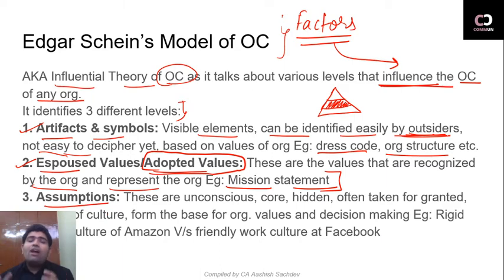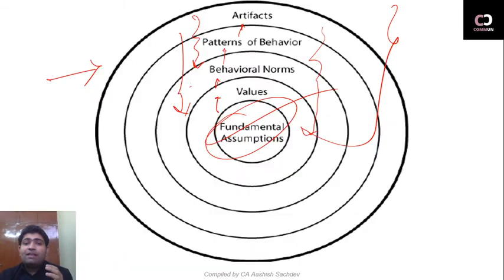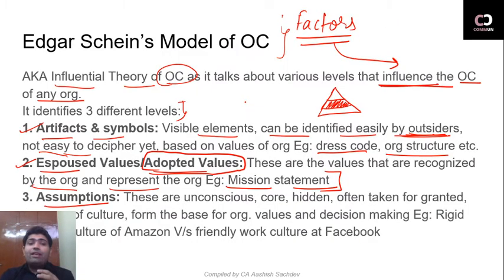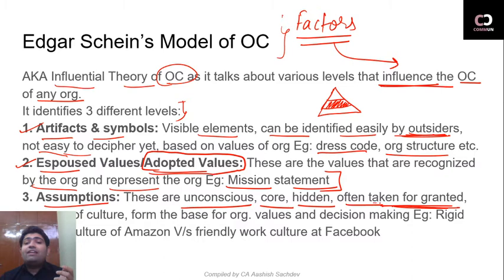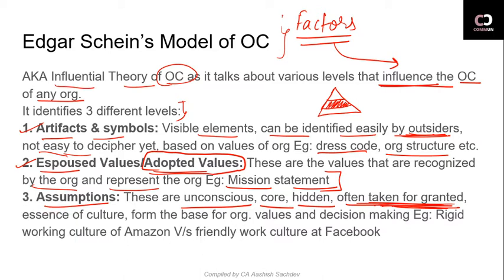The third level is Core Assumptions — also called Fundamental Assumptions — which are the most important. This is again the unconscious, core, hidden part — often taken for granted; nobody pays attention to these. That is why they are said to be often taken for granted. These are the essence of culture; they form the base for the organization's values and decision making.